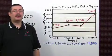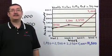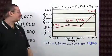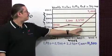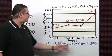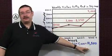First, use the line graph to find the approximate number of visitors for each week. Once you do that, just add up the values and you get 11,500.